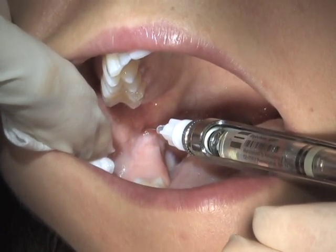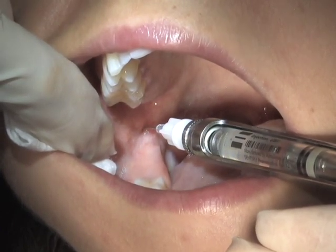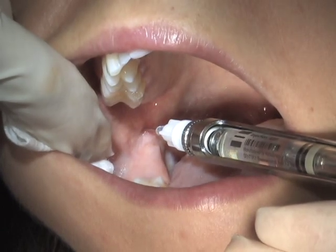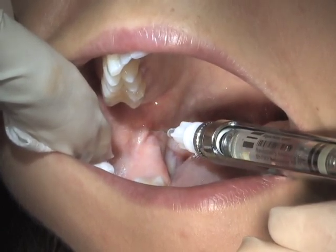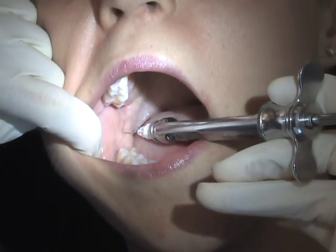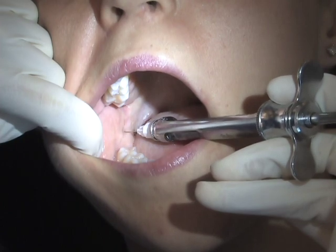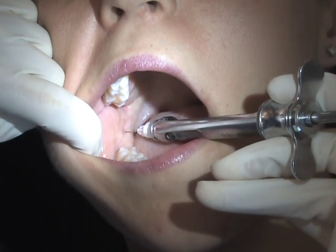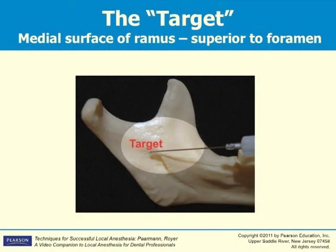In the opposite case — that is, the needle does not contact periosteum at the anticipated depth — the clinician should withdraw the needle slightly from the tissue and redirect the barrel of the syringe more posteriorly toward the molars, then readvance the needle until periosteum is gently contacted.